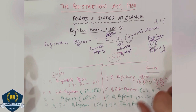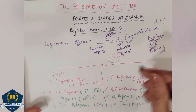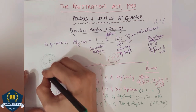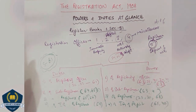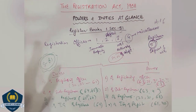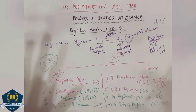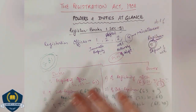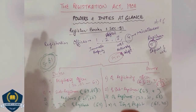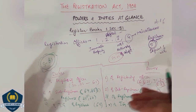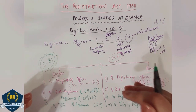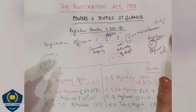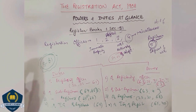When the conclusion of all these powers and duties is given in section 81, it states two things: first, powers are not unlimited — they are limited. Second, if the requirements are fulfilled, it is the duty of the registering officer to register the document.